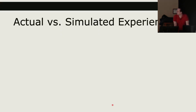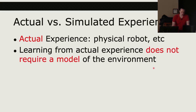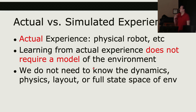By actual experience, I mean something in the real world — a physical robot walking around, learning policies the way a human learns. Learning from actual experience means we don't have a model of the environment, but that's okay because Monte Carlo methods do not require a model. We don't need to know the dynamics, the physics formulas, the layout, or even the full state space. We just do things, record how we did, and learn from that.